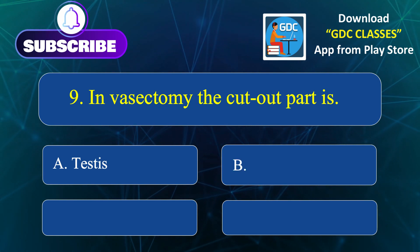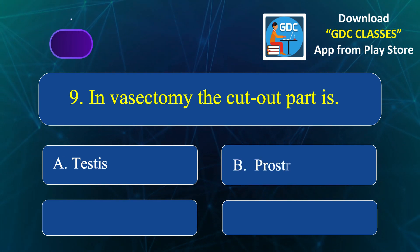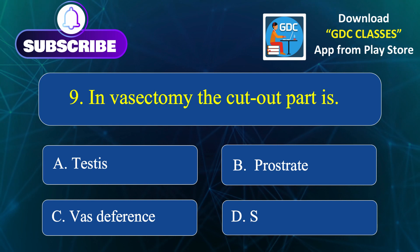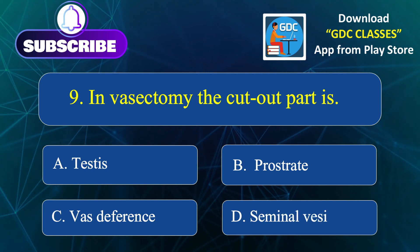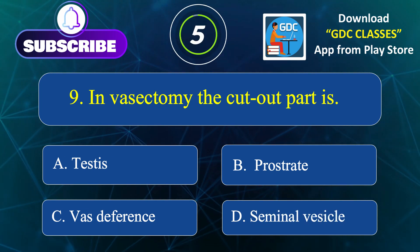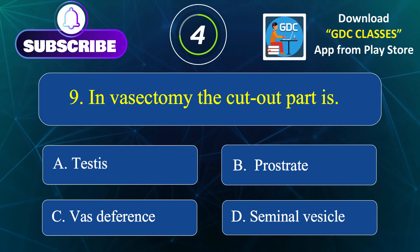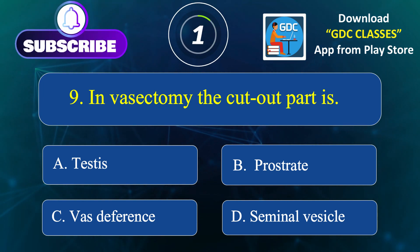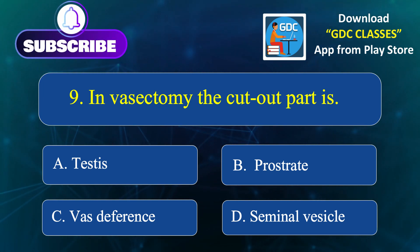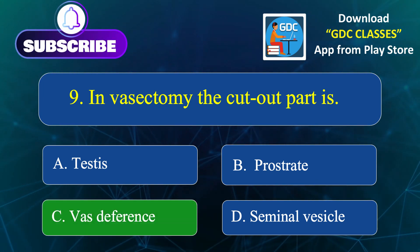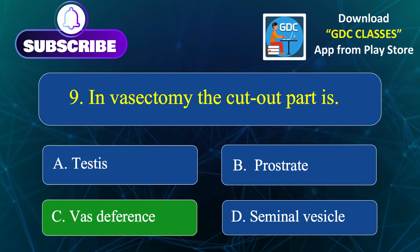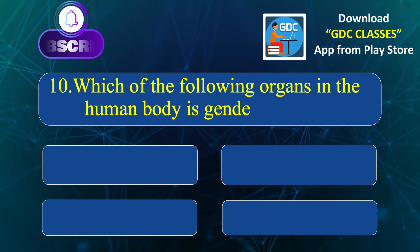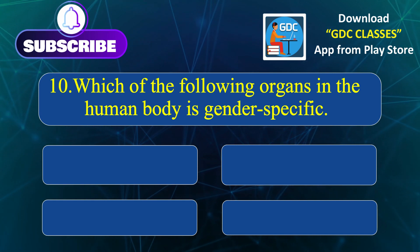In vasectomy, the cut-out part is: Option A. Testes, Option B. Prostate, Option C. Vas deferens, Option D. Seminal vesicle. Correct answer is Option C: Vas deferens.